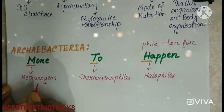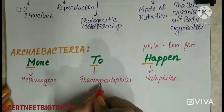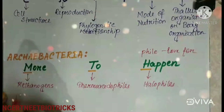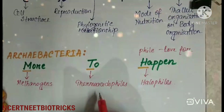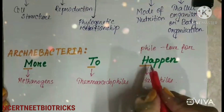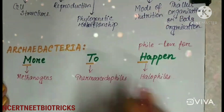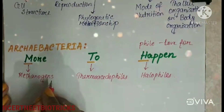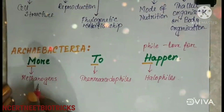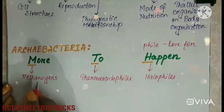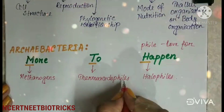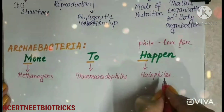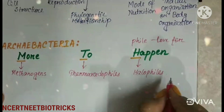Methanogens produce CH4 gas. So M for Methanogens, T for Thermoacidophiles, and H for Halophiles. Methanogens are found in the gut of ruminant animals. Thermoacidophiles are found in deep sea vents, and Halophiles in marshy areas.